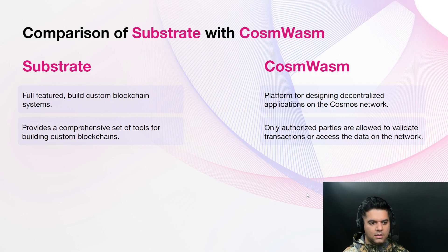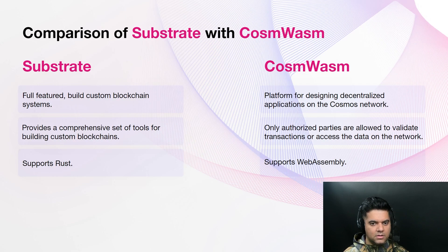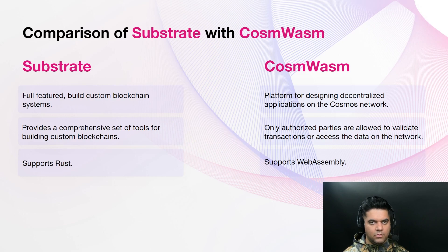Substrate also supports Polkadot, a heterogeneous multi-chain network that enables interoperability between different blockchains built on Substrate, while CosmWasm is designed to work specifically with the Cosmos network. In terms of programming languages, Substrate supports Rust, a systems programming language, while CosmWasm supports WebAssembly, a binary instruction format that can be executed in a browser or standalone environment. In summary, if you're looking to build a custom blockchain system with a wide range of features, Substrate may be the better option, while if you're looking to build a decentralized application on the Cosmos network, CosmWasm may be the more suitable choice.